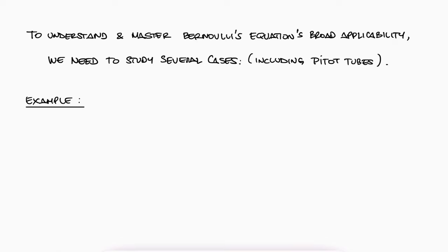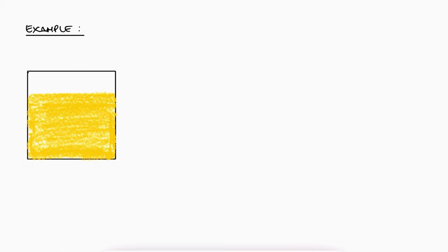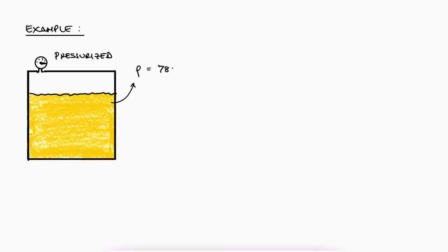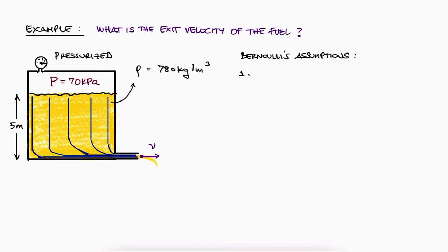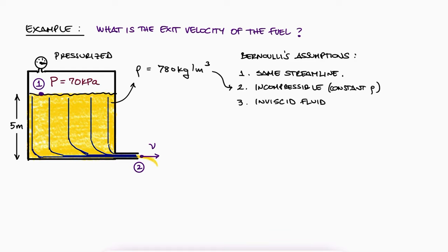To illustrate how the Bernoulli equation can be used in a simple case, consider the following problem. We have a pressurized reservoir with car fuel that has a density of 780 kg/m³. The air pressure inside the tank is 70 kilopascals and the height of the liquid is 5 meters. Right at the bottom of the tank there's an opening that allows the fuel to be dispensed. What is the exit velocity of the fuel through the opening? Since all of the liquid in the tank must come out through this hole, we can think of the streamlines as beginning at the fluid surface and ending at the exit. The fuel is incompressible and has a low viscosity, allowing us to assume the fluid is inviscid.